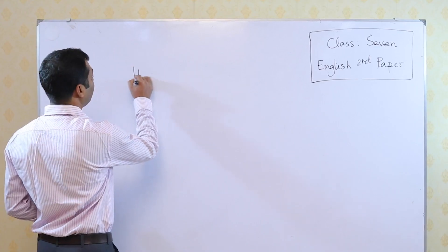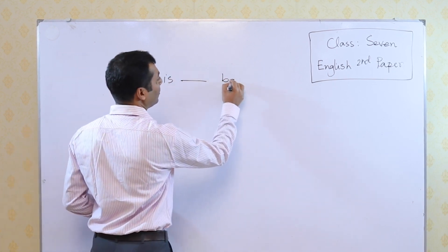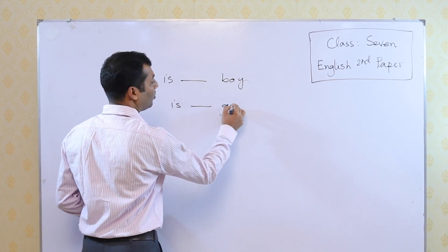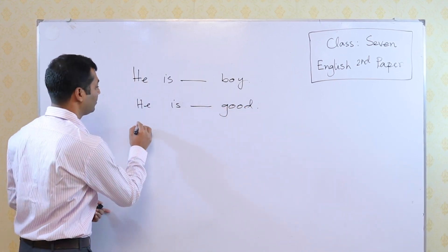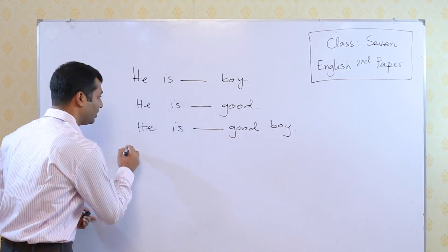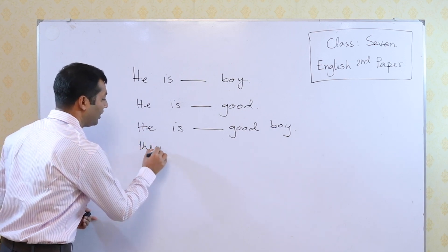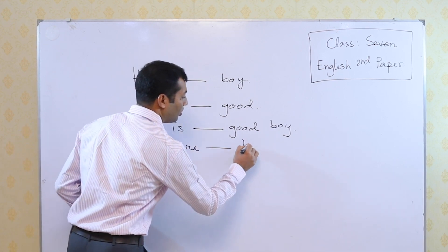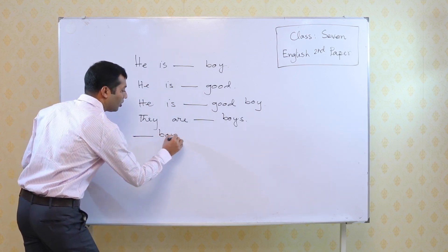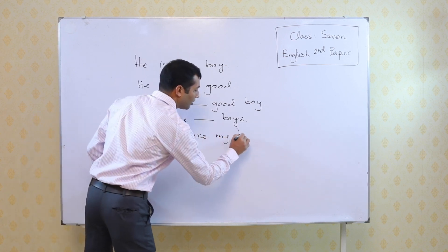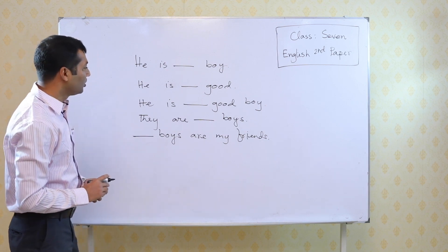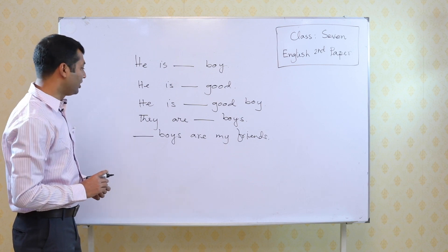So let's go to the board. He is dash boy. Next sentence: he is good. The next sentence: he is dash good boy. I come to the next sentence: they are boys. Then the next sentence: dash boys are my friends. Look at these five sentences: he is dash boy, he is dash good, he is dash good boy, they are dash boys, and dash boys are my friends.